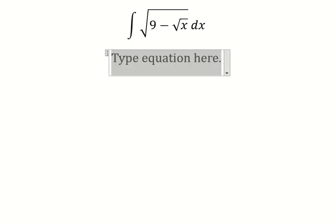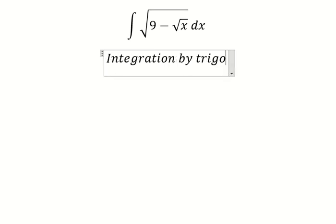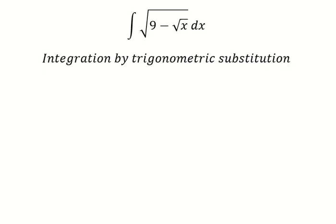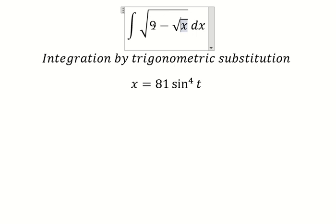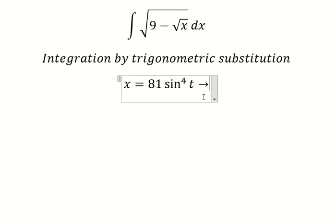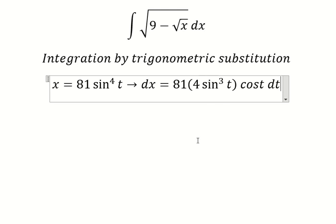Hello everybody. Today I want to show you how to answer this integral using trigonometric substitution. I will put x equals to 81 sin⁴(t), because if we substitute this in, we have 9 sin²(t), and then 9 and 9 — we can factorize: one minus sin²(t) becomes cos²(t). We simplify the square root. Next we need to find the first derivative of both sides, and 81 times four gives us 324.